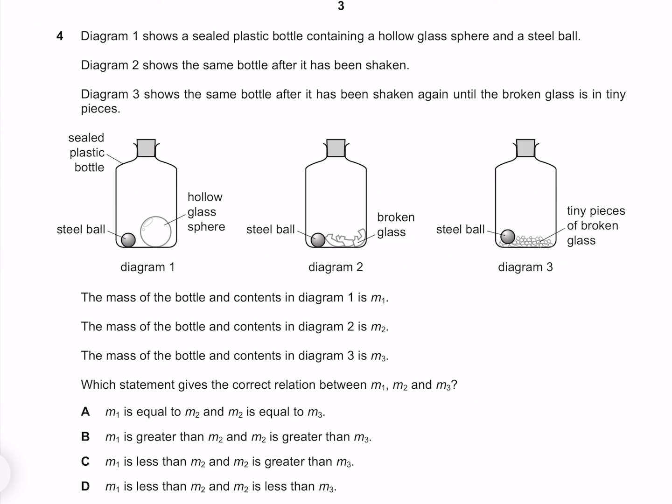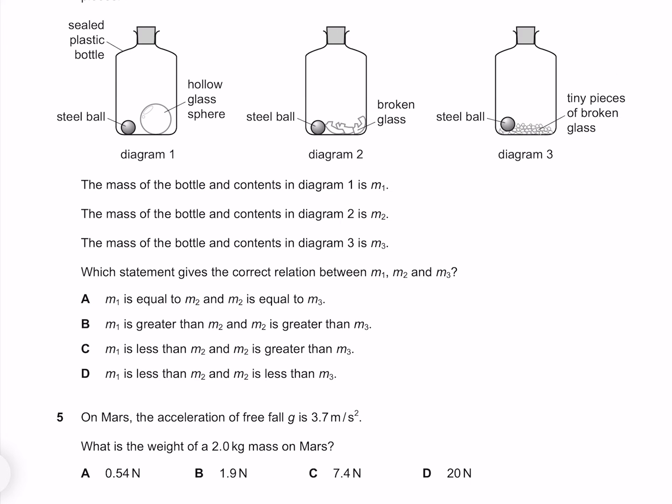Diagram one shows a sealed plastic bottle containing a hollow glass sphere and a steel ball. Diagram two shows the same bottle after it has been shaken. Diagram three shows the same bottle after it has been shaken again until the broken glass is in tiny pieces. The mass of the bottle and contents in diagram one is M1, M2 in diagram two, and M3 in diagram three. Which statement gives the correct relation between M1, M2, and M3? Because we've had no mass enter or leave the system, we've merely had the existing mass broken into tiny pieces, our masses should all be the same. Therefore M1 equals M2 and M2 equals M3 is the correct answer.